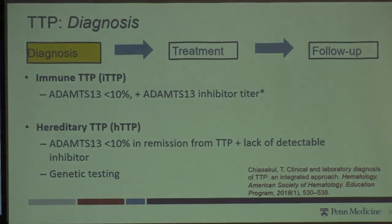So we really have two types of TTP. The far more common in adults is immune or acquired TTP — meaning you're not born with it, but you have an antibody attacking ADAMTS13. And then there's hereditary TTP, also called congenital TTP, where it's an inherited genetic mutation.